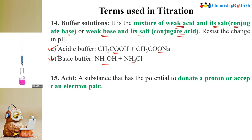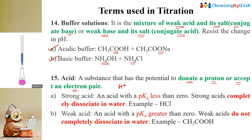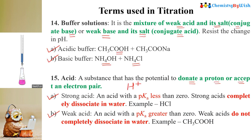The next term is acid. An acid is a substance that has the potential to donate a proton — it donates H+ ions, accepts electron pairs, and when dissolved in water, dissociates into H+ ions. Acids are of two types: strong acid and weak acid. A strong acid has a pKa less than zero and is completely dissociated in water. A weak acid has a pKa greater than zero and does not completely dissociate in water — for example, acetic acid.